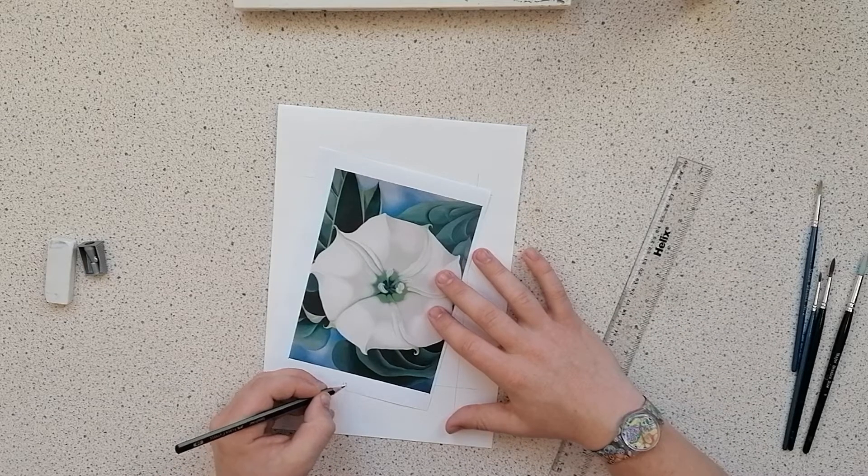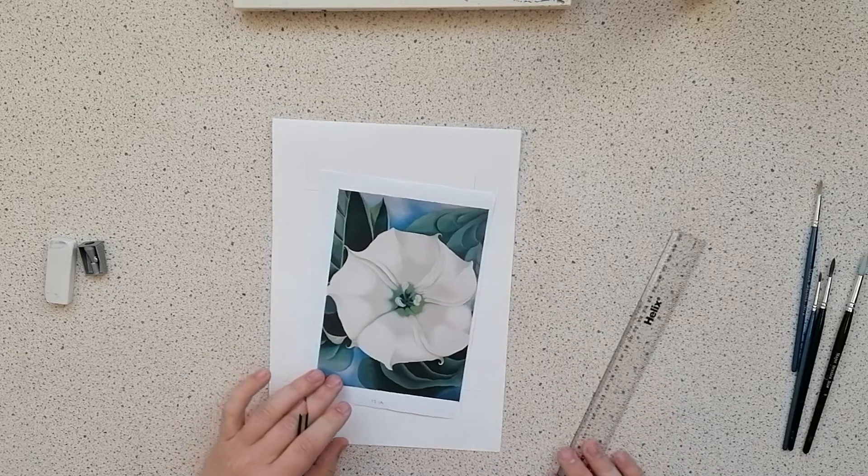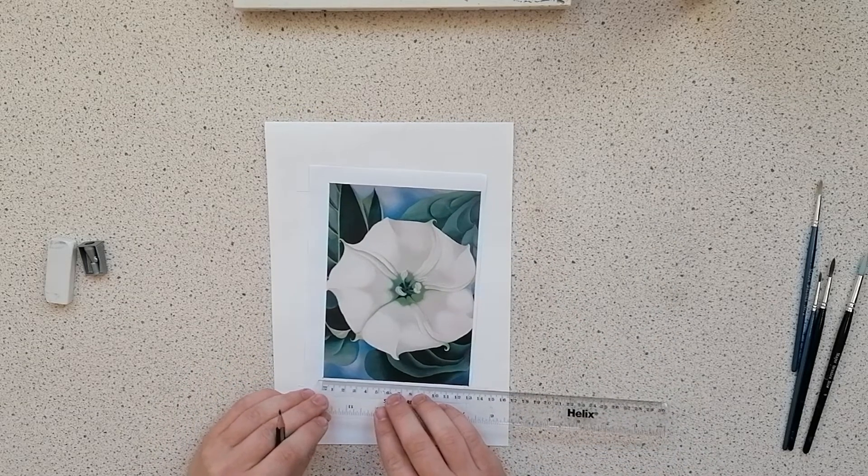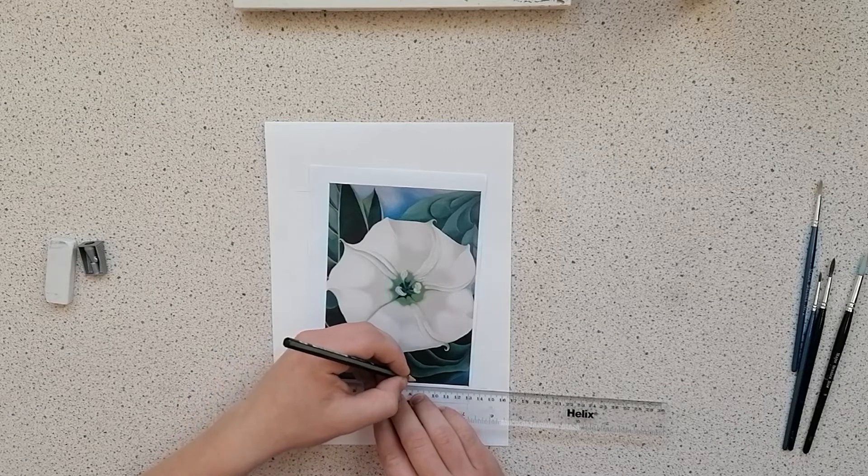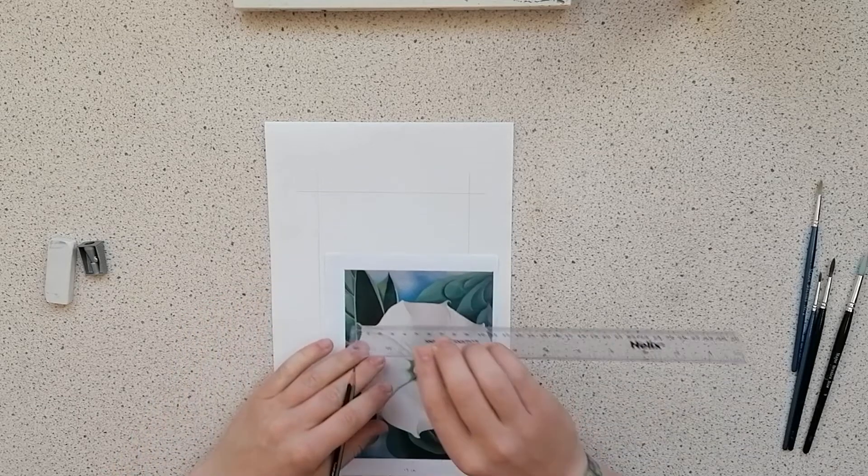So on the ruler just make a mark, start from 0 to 4.3, and then double that we go to 8.6, and make two distinct marks.